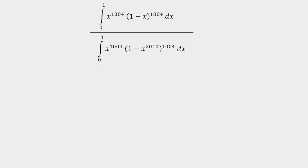In today's lecture, I am going to solve a question from integration. The question is we have to find the ratio of two integrals. The first integral i1 is the integration from 0 to 1 of x to the power 1004 multiplied by (1 minus x) to the power 1004. The second integral i2 has the same limits, with x to the power 1004 multiplied by (1 minus x) to the power 2010. So the ratio is i1 upon i2, where i1 is the numerator and i2 is the denominator.